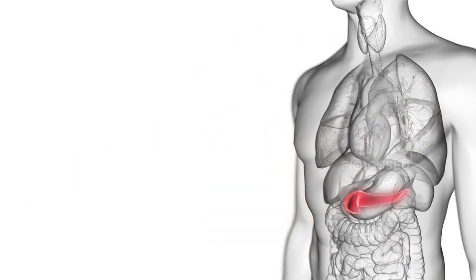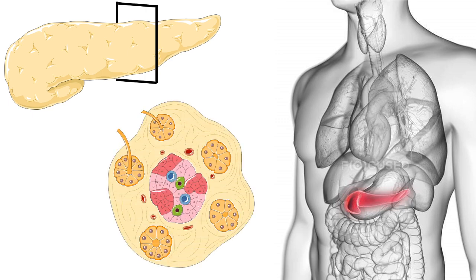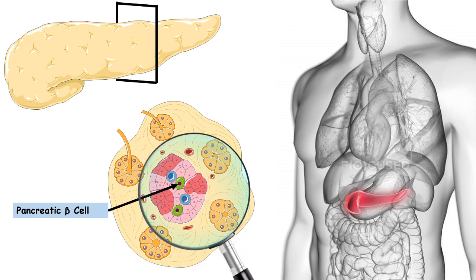Here is our pancreas. If you zoom into the pancreas and take a cross section, it would somewhat look like this. The green cells depicted here are beta cells, and these beta cells secrete insulin. There are other cell types also present in the pancreas, but let's focus on the pancreatic beta cells.